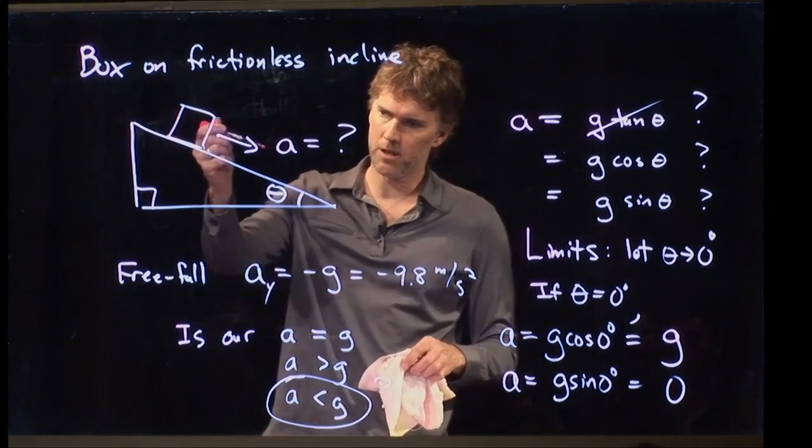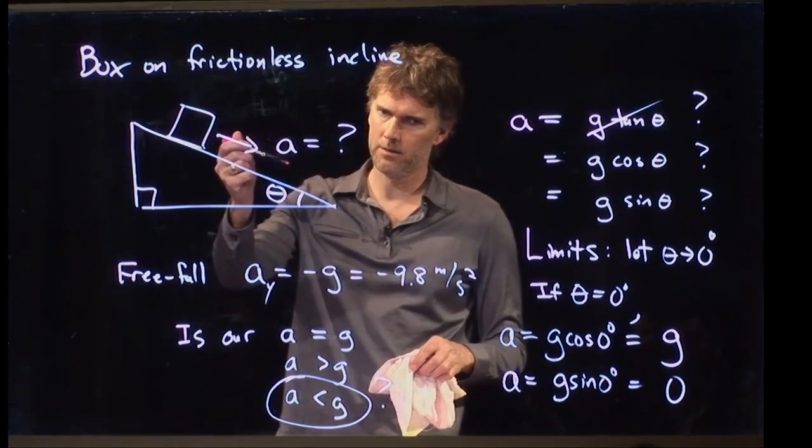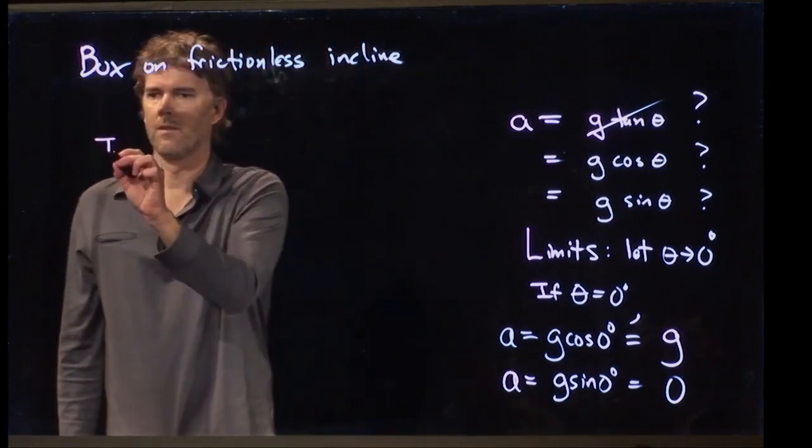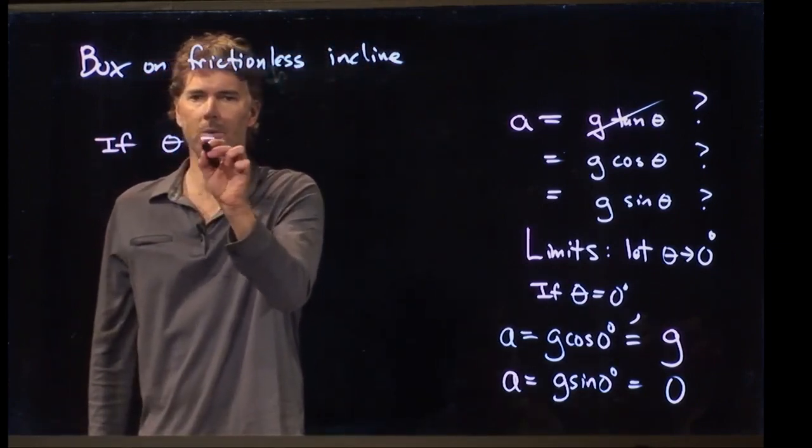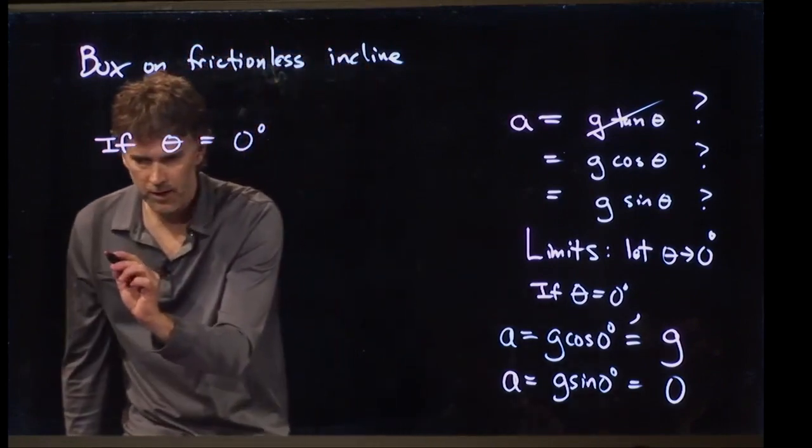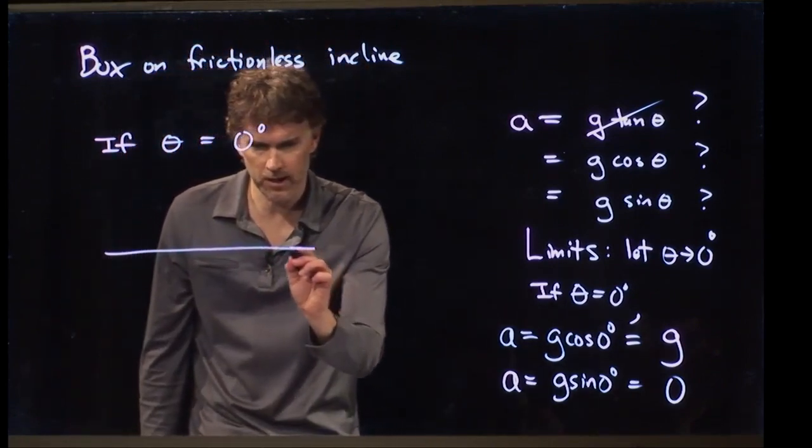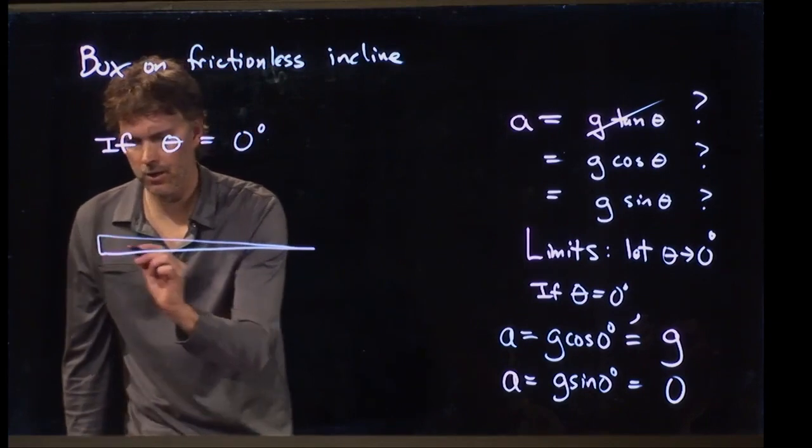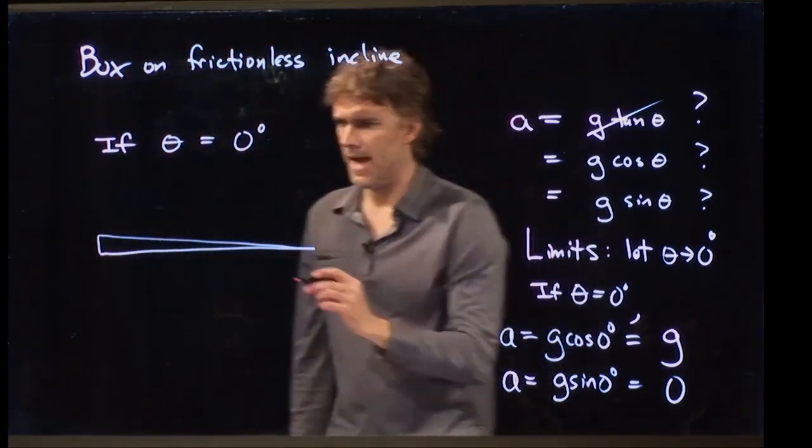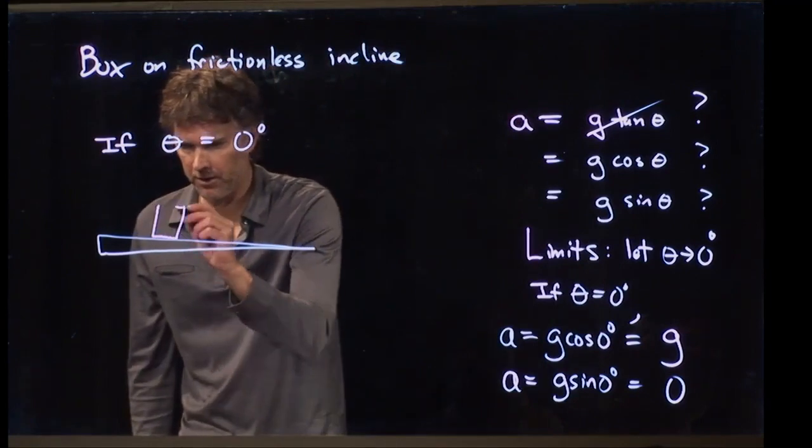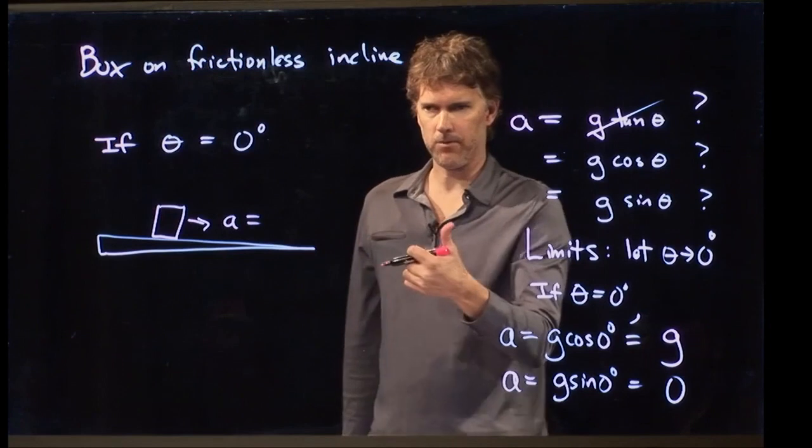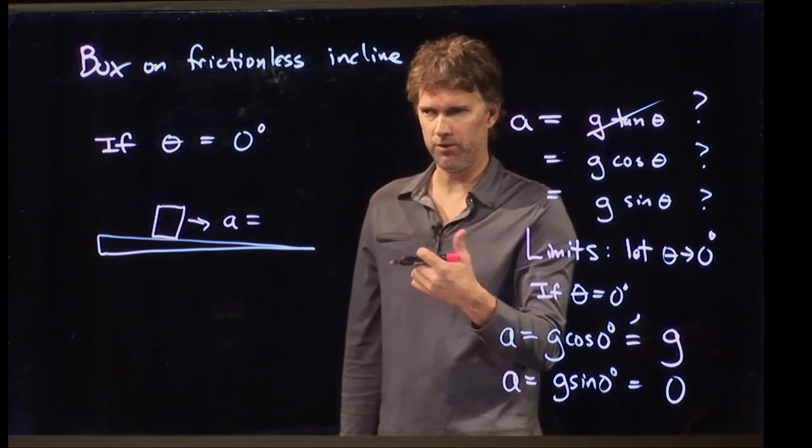And remember, we define the acceleration down the incline. So let's look at that. If theta equals 0 degrees, or we'll say it's approaching 0 degrees, then what does my triangle look like? It looks like nearly a flat surface. And if it's a flat surface, what do you think the acceleration should be in that direction?